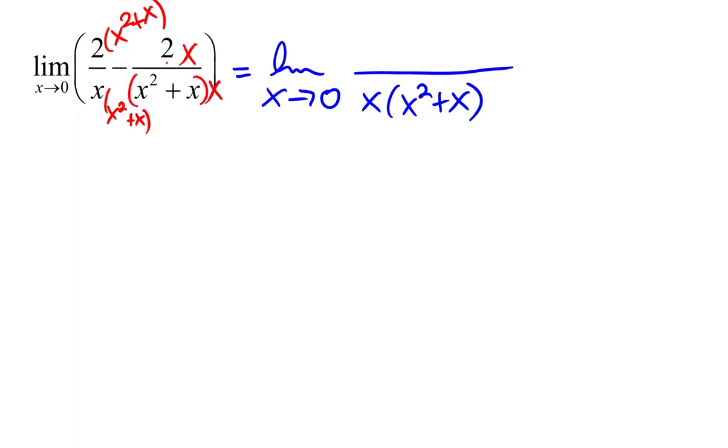Alright, so let's see what we have. The denominator is x times x squared plus x. The numerator, I'm going to distribute this through, is going to be 2x squared plus 2x, and then don't lose this minus right here, minus 2x.